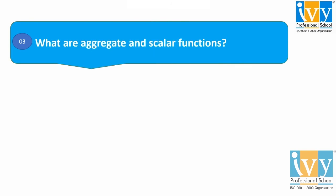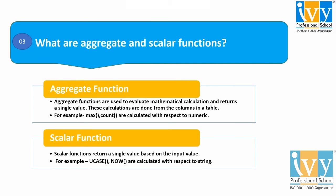Moving to the third question: what are aggregate and scalar functions? Aggregate functions are used to evaluate mathematical calculations and return a single value. These calculations are done from the columns in a table — for example, MAX and COUNT are calculated with respect to numeric values. Other examples include AVERAGE and MEAN. Now, coming to scalar functions: a scalar function returns a single value based on the input value — for example, functions calculated with respect to strings. We can also consider the MID function and the ROUND function.